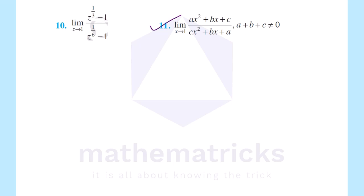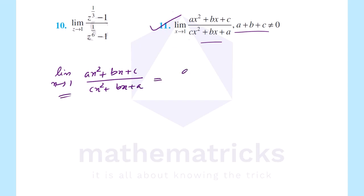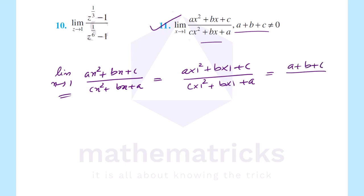Next question: limit x tends to 1, ax square plus bx plus c divided by cx square plus bx plus a, where a plus b plus c is not equal to 0. Substituting x = 1: a plus b plus c divided by c plus b plus a. Numerator and denominator are both a plus b plus c, so they cancel, giving 1. Answer is 1.